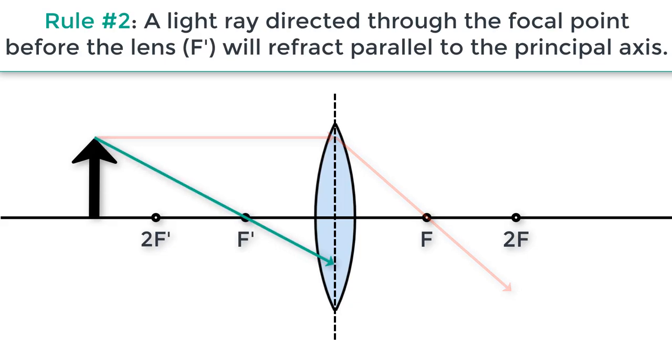Rule number two: a light ray directed through the focal point before the lens F prime will refract parallel to the principal axis.